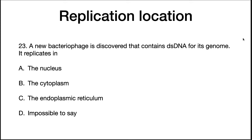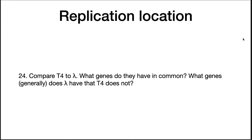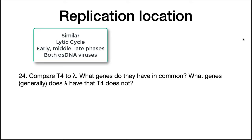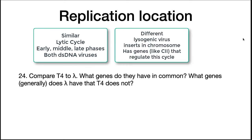Comparing T4 and Lambda: they both have lytic cycles, they both go through early, middle, and late gene phases, and they're both double-stranded DNA viruses. However, Lambda is a lysogenic virus that can insert into the chromosome — that's what makes the difference.